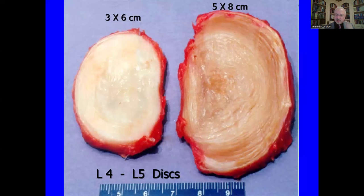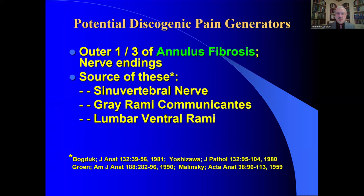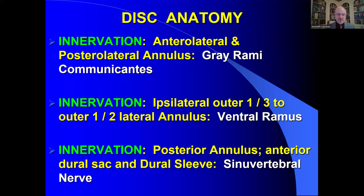These are two intervertebral discs from the L4-L5 level. The disc on the left was taken from a 23-year-old trauma victim who died in a motor vehicle accident; the disc on the right is from a 92-year-old individual who died of natural causes. You can see morphologically the changes that occur with the aging disc — the change in collagen from type 2 to type 1 in the nucleus. The pain generators are located in the outer third of the annulus fibrosus, and the nerve endings come from three sources: the sinuvertebral nerve, the gray rami communicantes, and the lumbar ventral rami.